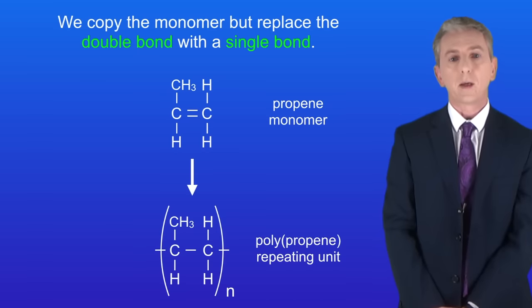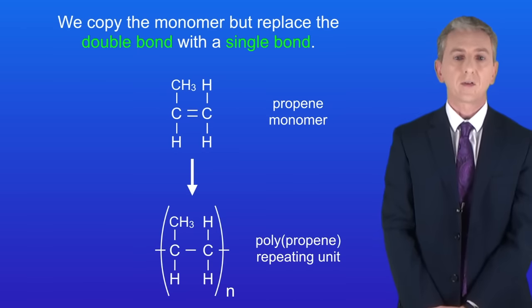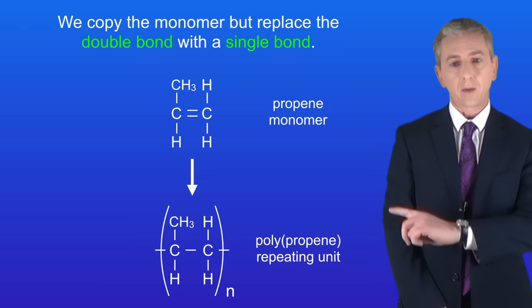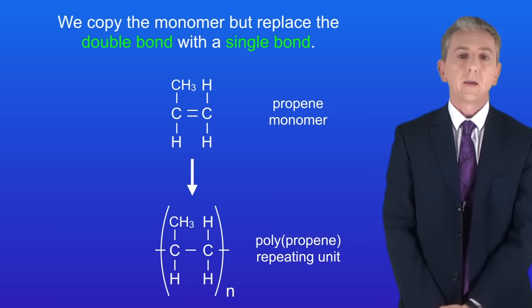Okay, so in this case we copy the monomer but replace the double bond with a single bond. And remember to draw bonds on either side of the carbon atoms, brackets around the whole thing, and write n on the right-hand side like this. And in this case the polymer is called polypropene.